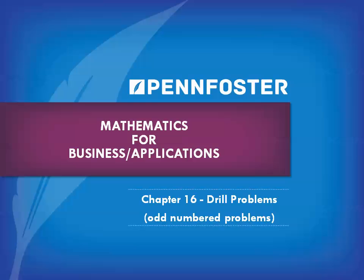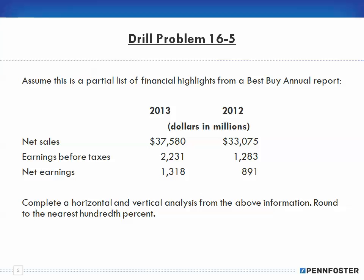Welcome back students taking Math for Business and Finance and Math Applications. We're doing the drill problems for Chapter 16, the odd number problems, and we are up to drill problem 16-5. This one says: assume this is a partial list of financial highlights from a Best Buy annual report. We have 2013 and 2012 figures for net sales, earnings before taxes, and net earnings — these are in dollars and millions. Complete a horizontal and vertical analysis from the above information, rounded to the nearest hundredth.